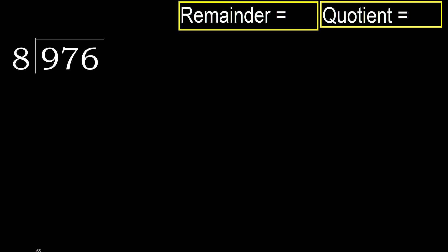976 divided by 8. 9 is not less, therefore with 9. 8 multiply by which number is nearest to 9 but not greater? 8 multiply by 2 is 16, 16 is greater. Multiply by 1 is 8, is not greater.